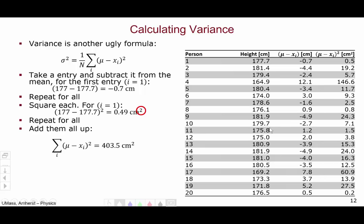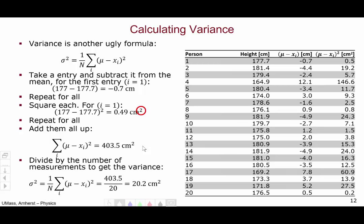To calculate variance, we take all of these numbers and add them up, which gets us 403.5 centimeters squared. To get the variance, we would divide by the number of measurements, which in this case is 20, giving us a variance of 20.2 centimeters squared.